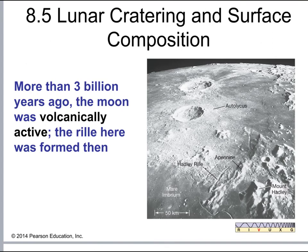Billions of years ago, the Moon was geologically active — it had volcanoes and the formation of mountain ranges and other surface features. But over time the Moon cooled off and is no longer geologically active. There are no more volcanoes, no moonquakes to speak of; it is essentially just a rock in space.